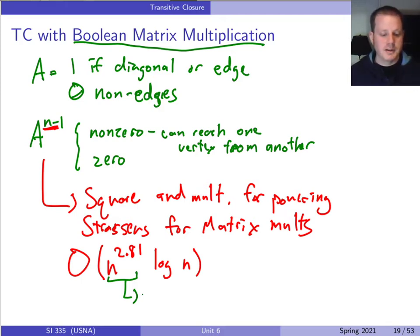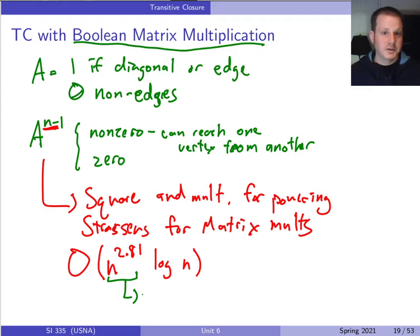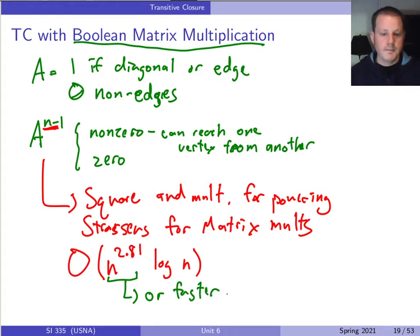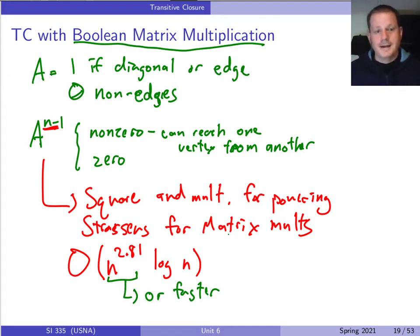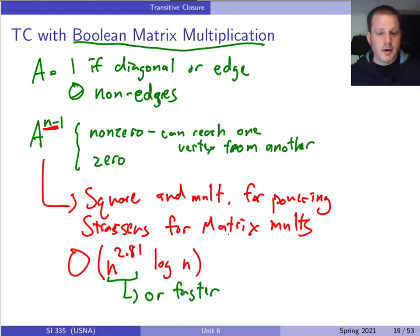Beyond Strassen's, there are other algorithms like Strassen-Winograd and more recent work by Williams, Le Gall, and others — including some work from within the past few months — that give even faster matrix multiplication. What makes this interesting is that it's a great example of connecting algorithms from seemingly different topics and using them to solve something else, in this case a graph problem.